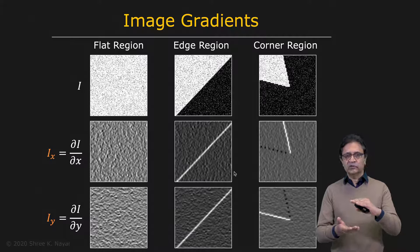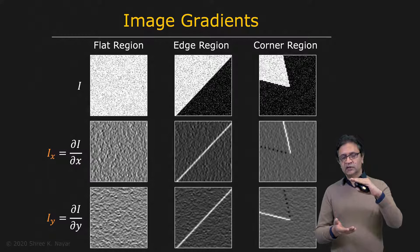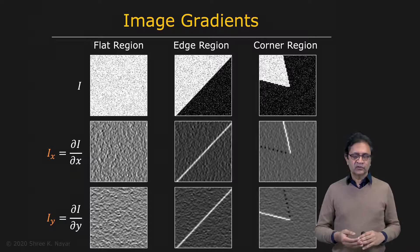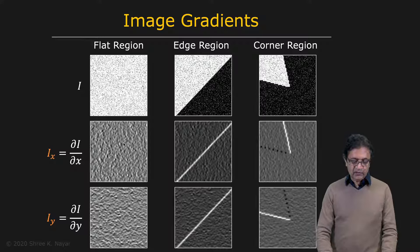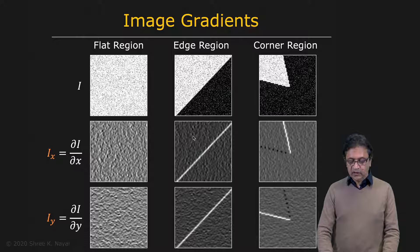In each case, we normalize the output so that white corresponds to a strong positive value, black is a strong negative value, and gray corresponds to a low value or zero. For the flat region, you get gray all over because you have low gradient in x and y, barring gradients from noise. For the edge region, you get low gradients on both sides of the edge, but a very strong positive gradient in the x direction along the edge, and the same for the y gradient.